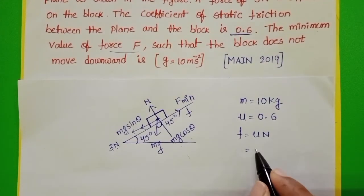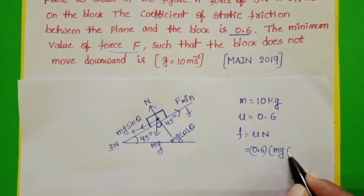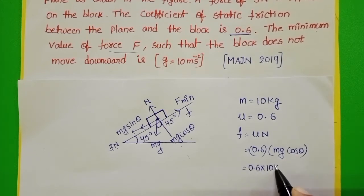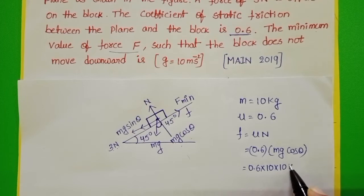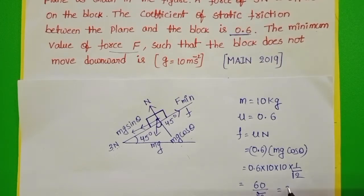Coefficient of friction 0.6, and in place of normal force, take Mg cos theta. 0.6 into mass 10, acceleration due to gravity 10 and cos 45 degrees 1 by root 2. 60 by root 2 is equals to 30 root 2.